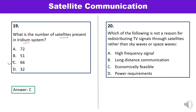Question 20: Which of the following is not a reason for redistributing TV signals through satellite rather than sky waves or space waves? Options are high frequency signal, long distance communication, economically feasible, and power requirements. Power requirement is not a reason for redistributing TV signals, because the other three options are actual reasons. Answer D is correct.